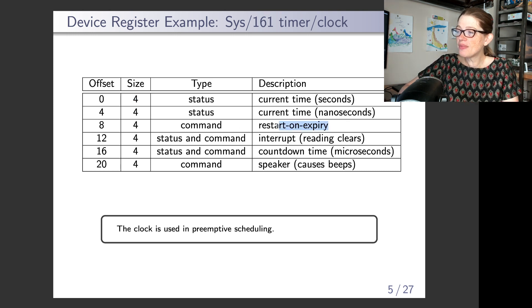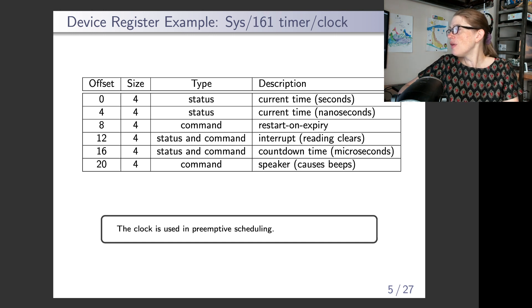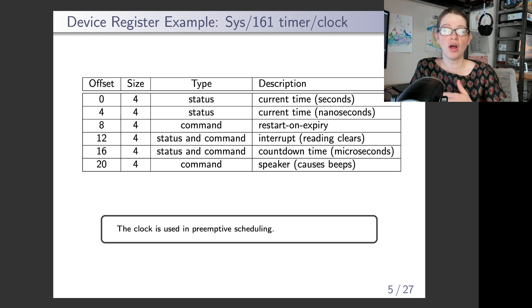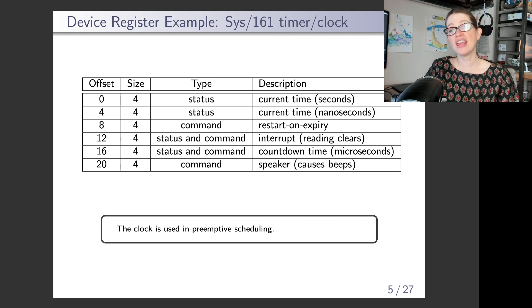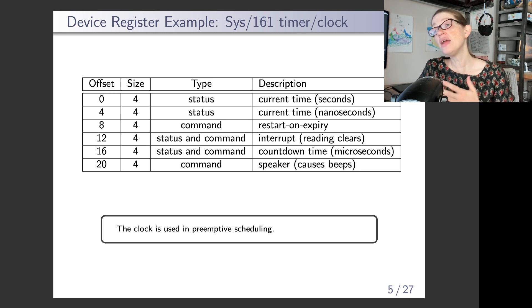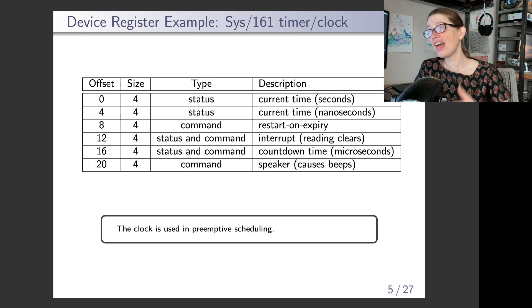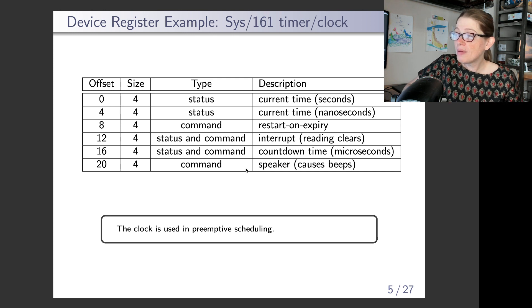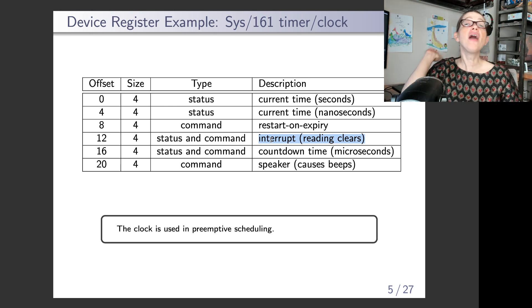I'm going to skip the offset register and talk about countdown time. The countdown time register — if you write a time in microseconds, it initiates a countdown on the clock. If you wanted preemption after 10 microseconds, you would write 10 to the countdown time register and it would start a countdown. When the count completes, the clock device will throw an interrupt and it will be marked in the interrupt status and command register to indicate the countdown has completed.